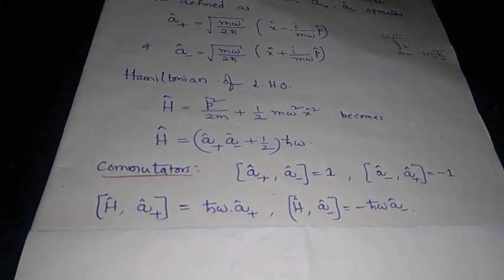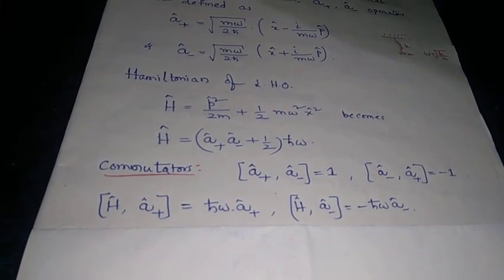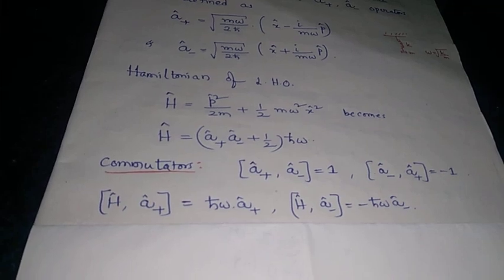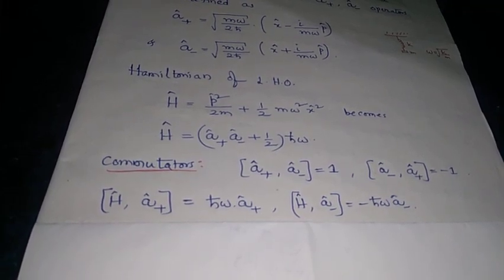We have the commutation relationships: A plus with A minus gives you 1, and if you reverse them it gives you minus 1.